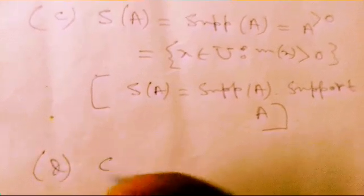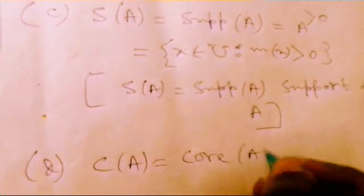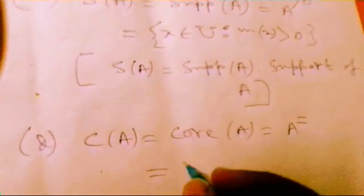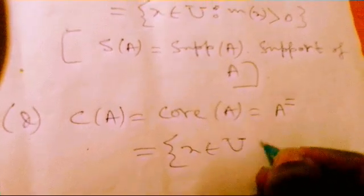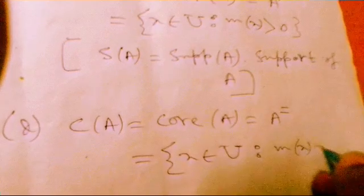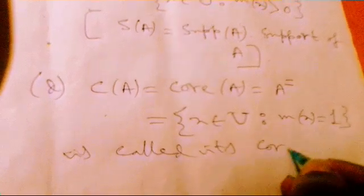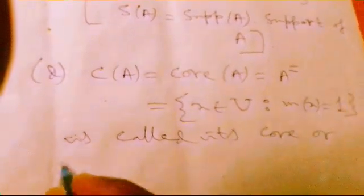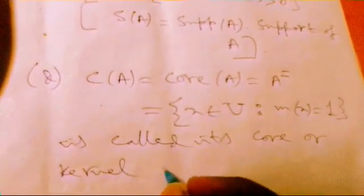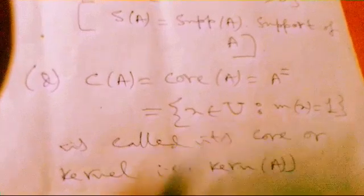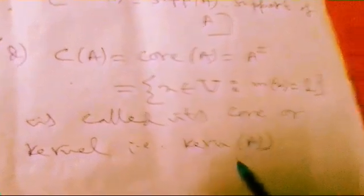And next condition is C(A) or core A, it can be also written in this manner, A equals 2. That means it is also called a cardinal concept. If X belonging to U such that membership function μx is equal to 1, we call it is called its core or cardinal that is KERN or whatever may be the notation is A. We are writing different notations, several notations we use, may use, this is another notation.